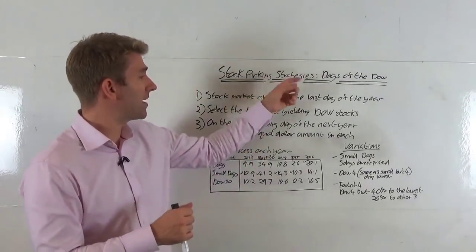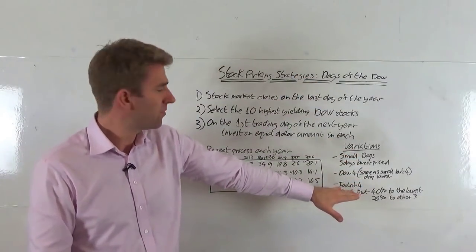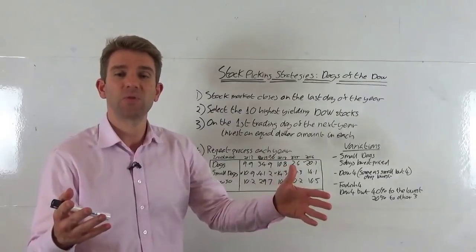Anyway guys, stock picking strategies, that's the dogs of the Dow, with the small dogs, Dow 4, and foolish 4 variants in it. See you in the next one, bye bye.